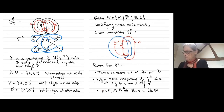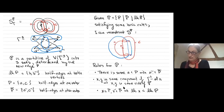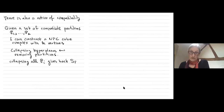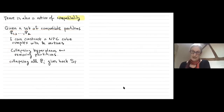The rules are easy to state even if there's not time to go through them here. That tells you how to construct gamma complexes with two vertices. For more vertices you need a notion of compatibility of partitions, and given any set of compatible partitions you can construct a gamma complex. Collapsing hyperplanes corresponds to removing partitions from this description; collapse them all and you get back the Salvetti.